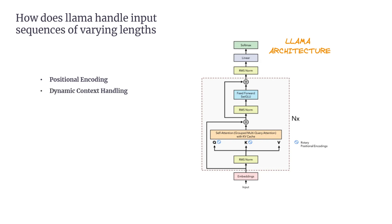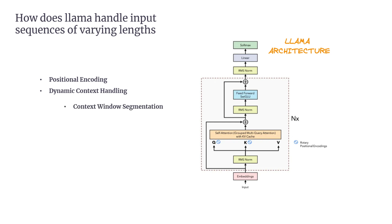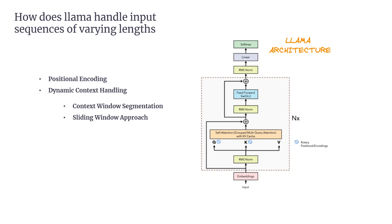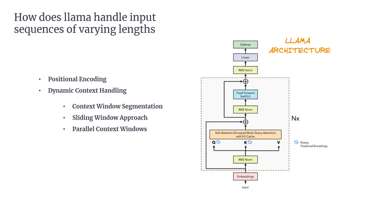The second, Dynamic Context Handling. When a sequence exceeds the model's maximum context length, LLAMA uses strategies like: Context Window Segmentation, where the input is split into smaller chunks that fit within the context window and each chunk is processed individually; Sliding Window Approach, where the context window is moved across the sequence incrementally; and Parallel Context Windows, where long inputs are divided into segments and attention is applied separately within each window. Positional encoding is redeployed across these segments to maintain context. This allows for better handling of extremely long sequences by focusing attention within each segment.